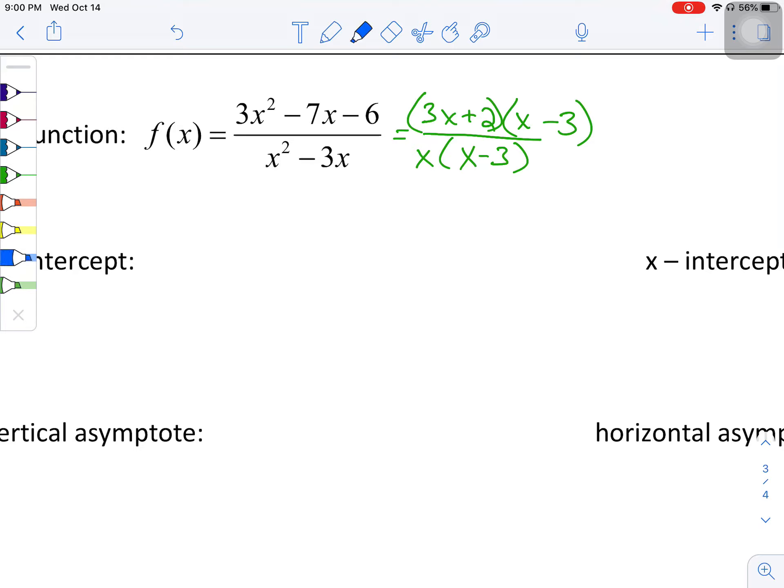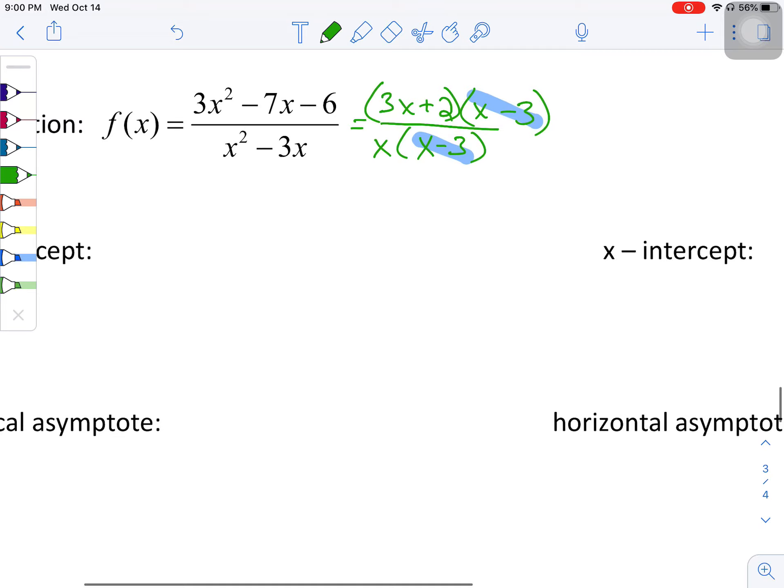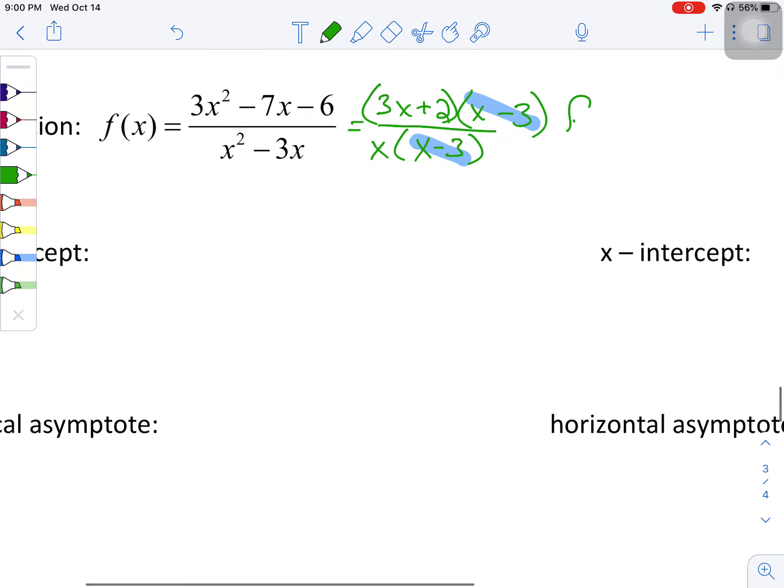So I can clearly see that those two terms, those factors will divide each other out. So what's left here is f of x is equal to three x plus two over just x.